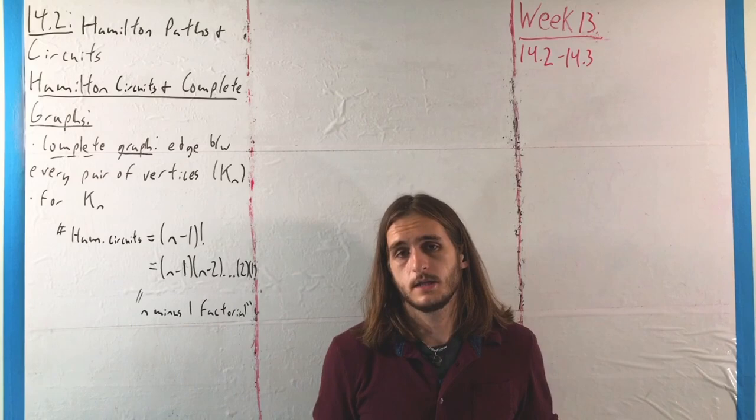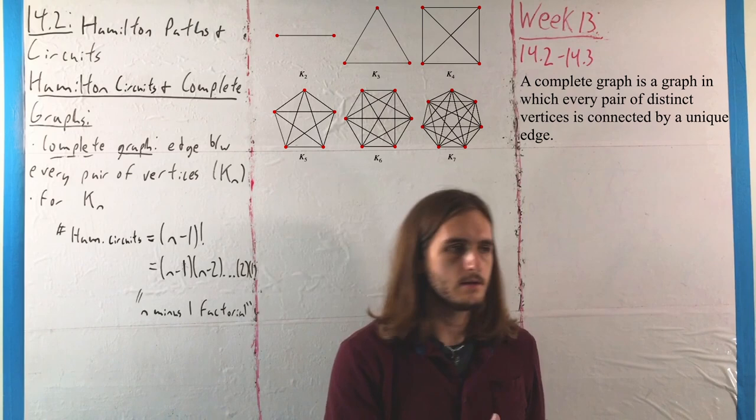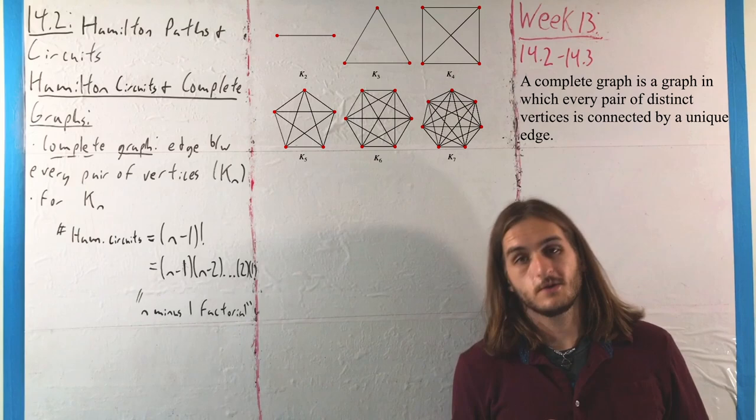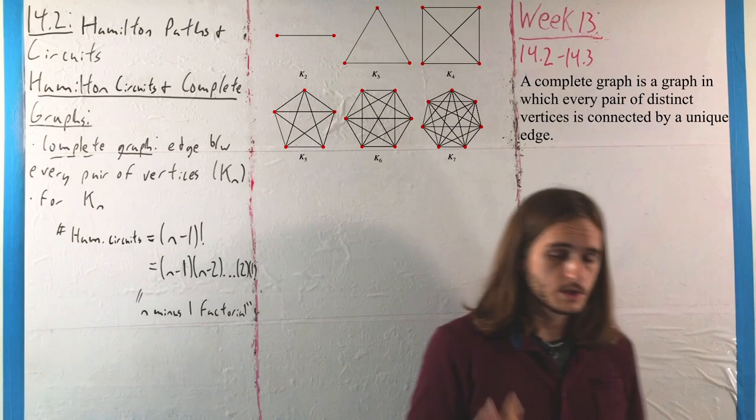One very special family of graphs we can look at within the context of Hamilton paths and circuits is the complete graphs, where we denote K sub n for complete on n vertices because c was taken for cycles. These are the graphs where we have an edge between every pair of vertices.